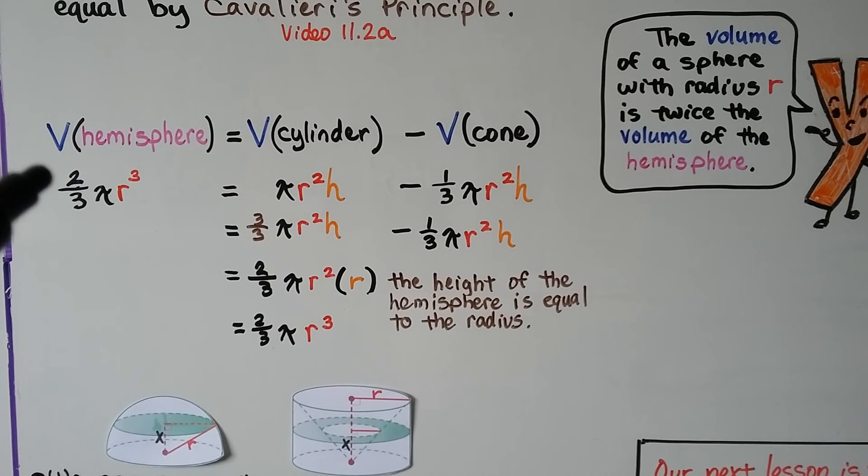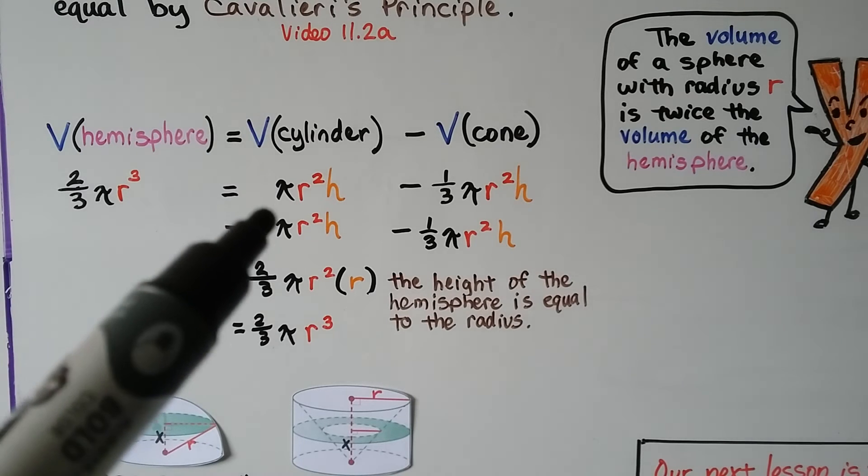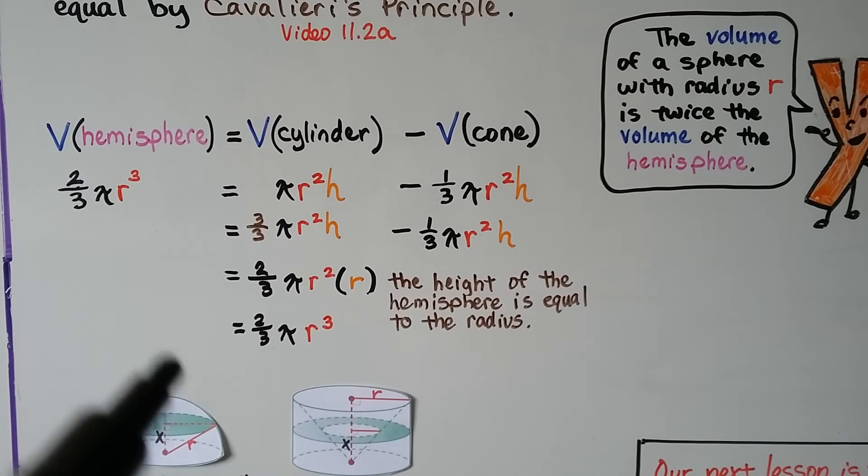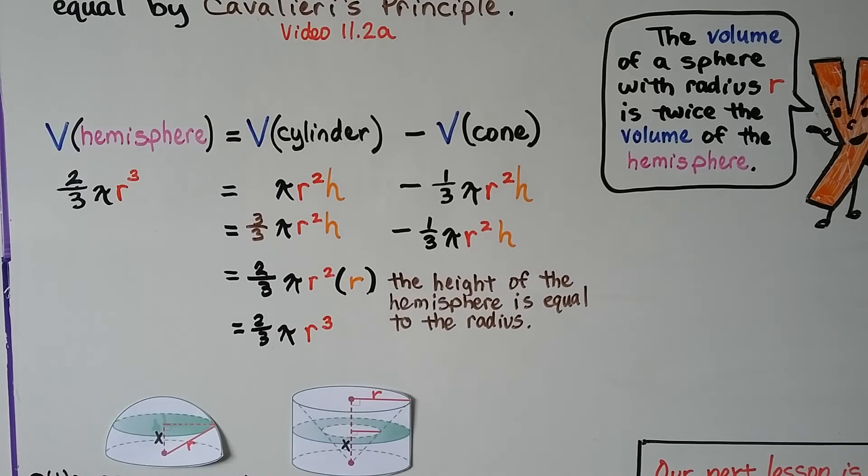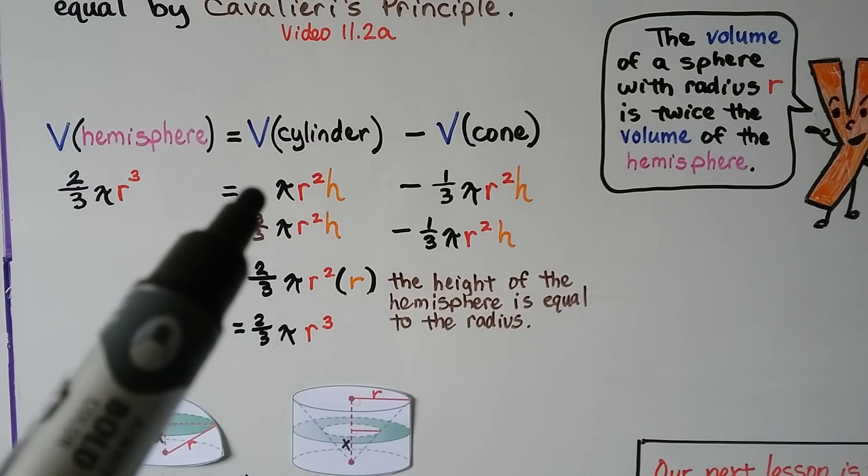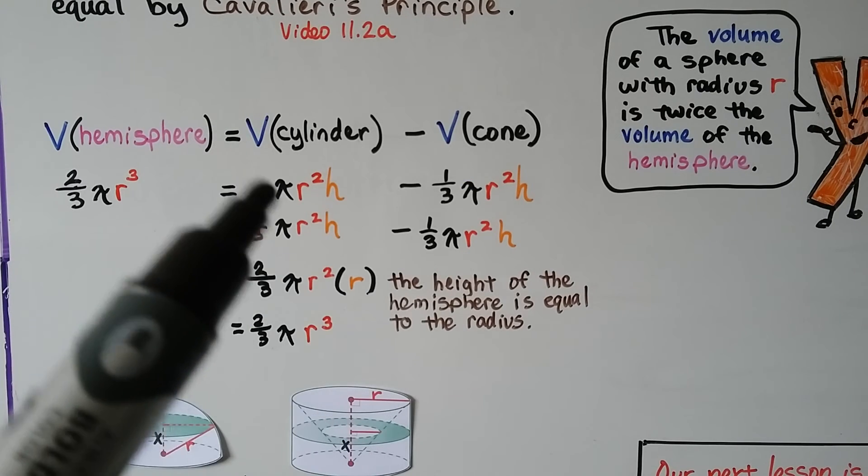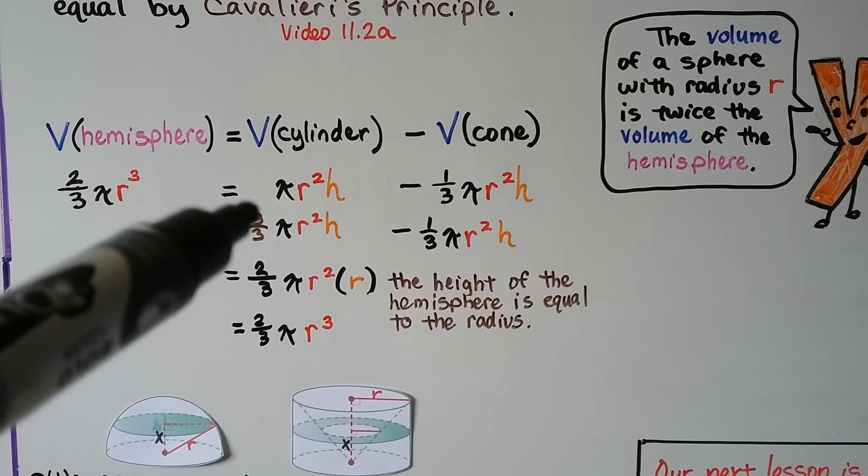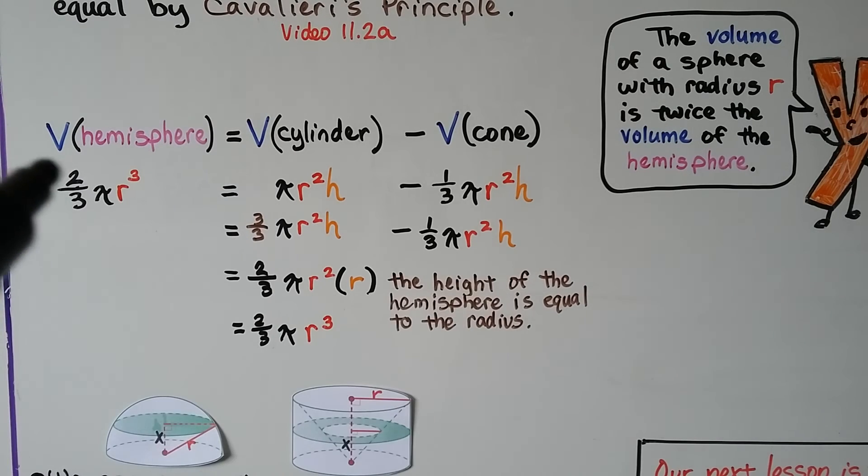The formula for the volume of a hemisphere is 2 thirds pi r cubed. The formula for the volume of a cylinder is pi r squared times height. And the volume of a cone is 1 third pi r squared times height. If we subtract this 1 third from this one, so there's technically a 3 thirds here, isn't there, there's like an invisible one. That would give us the 2 thirds.